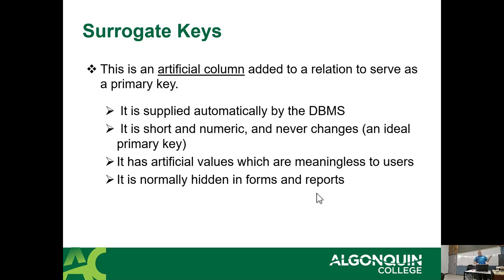A surrogate key is an artificial column added to a relation to serve as a primary key. It's supplied automatically by the database server. It's short and numeric, it never ever changes, it can never be reused, it can't be given to anybody else, and it has artificial values which are meaningless to users. It's usually hidden on most forms.